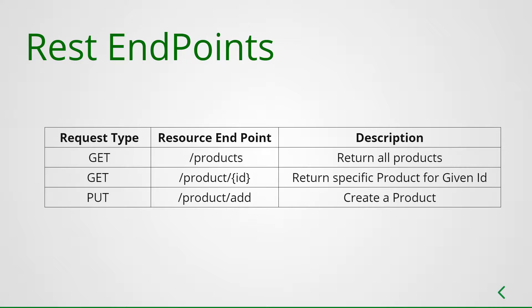Now I'm going to go over my APIs. I have three APIs. The first is a Products API which returns all products available in our repository. The second takes an input product ID from the client and returns the respective product information for that given product ID. The third is a PUT request that takes product information from the client and adds the product into our repository.